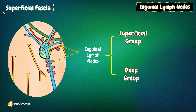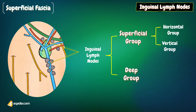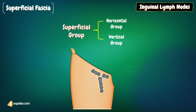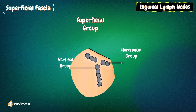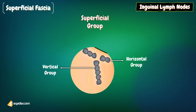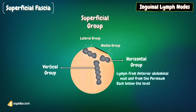The superficial group is further divided into horizontal and vertical groups. The superficial nodes lie in the superficial fascia below the inguinal ligament. The horizontal group lies just below and parallel to the inguinal ligament. The medial members receive superficial lymph vessels from the anterior abdominal wall below the level of the umbilicus and from the perineum, including lymph vessels from the urethra, the external genitalia of both sexes (but not the testes), and the lower half of the anal canal.